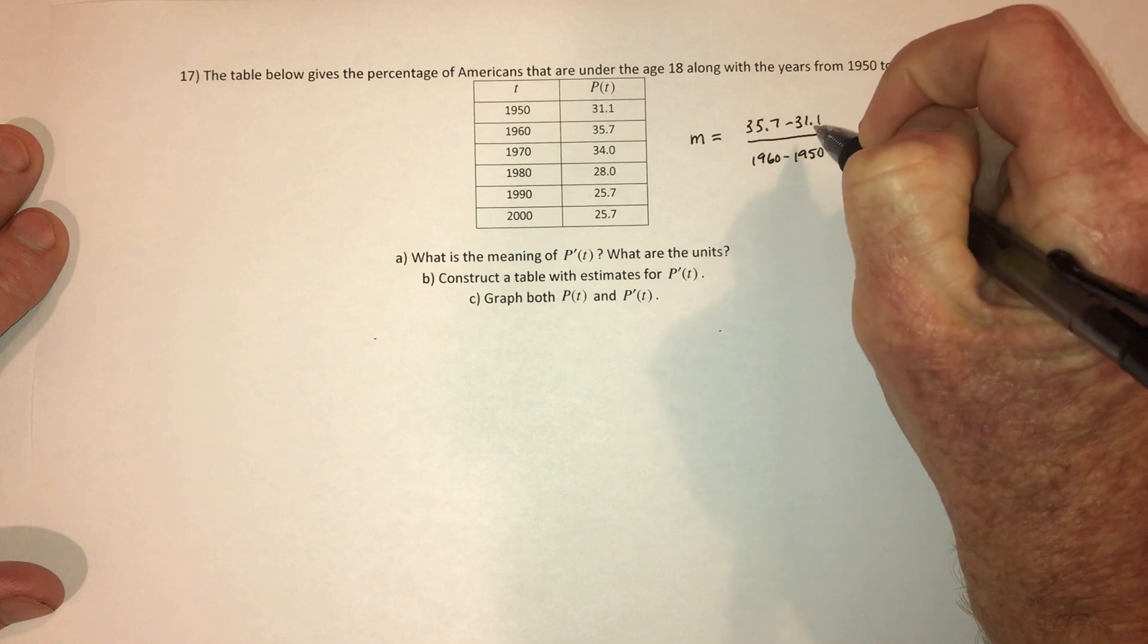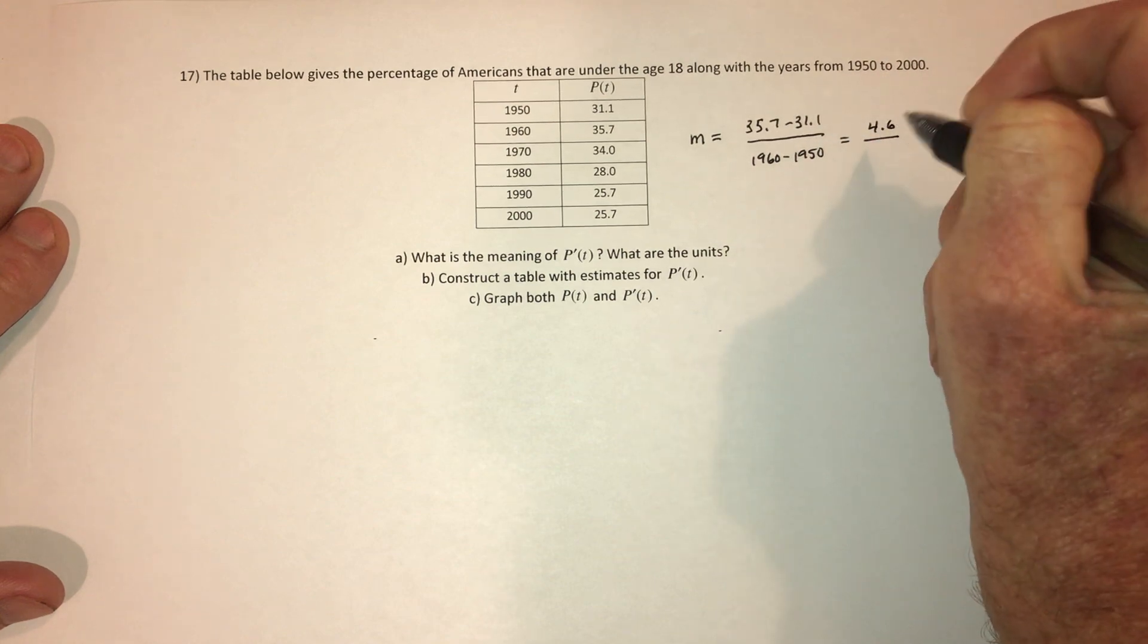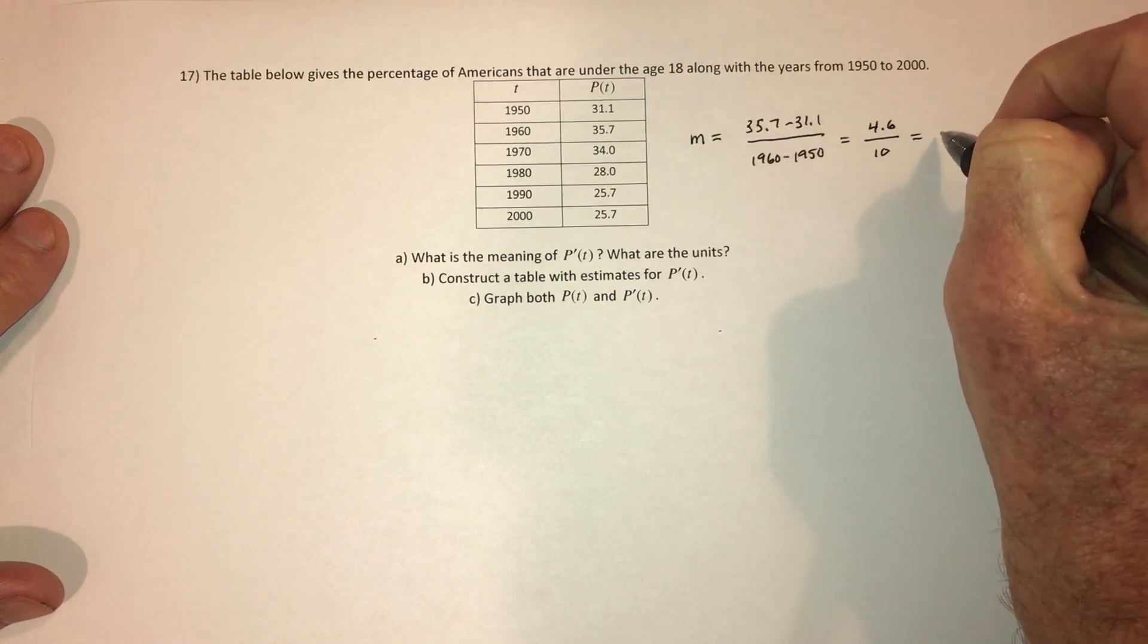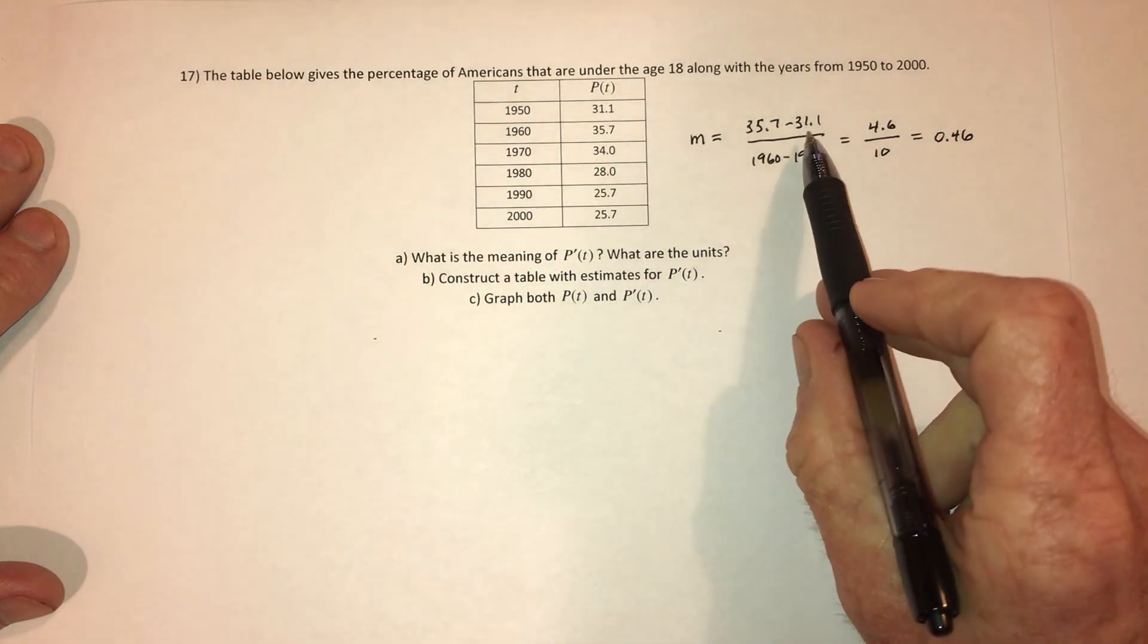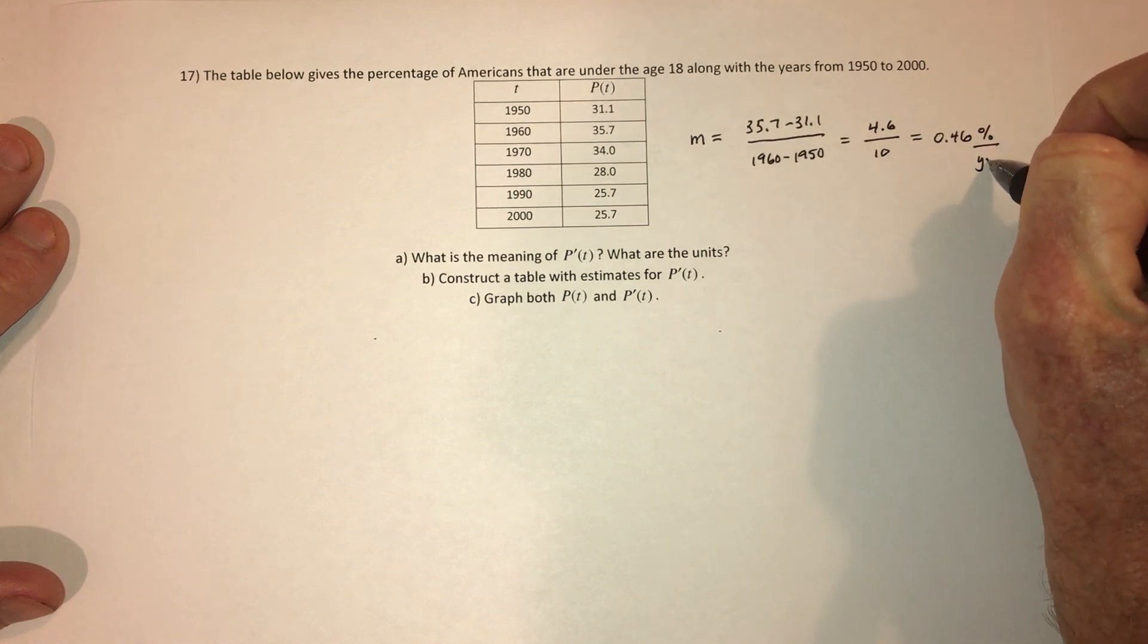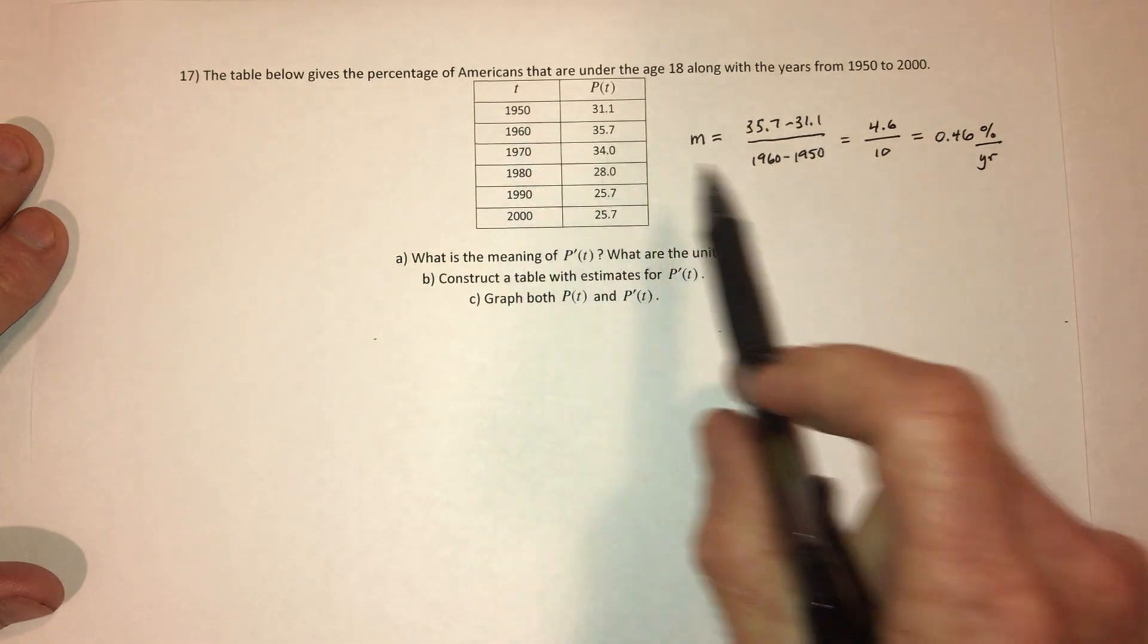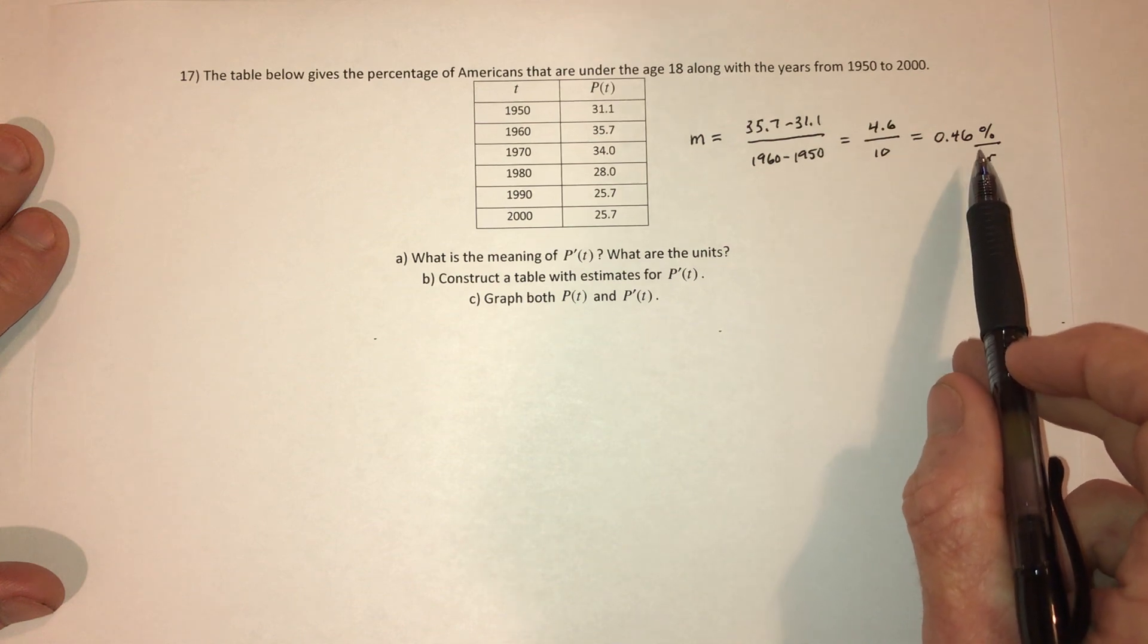So on the top, that is going to be 4.6. On the bottom, that's going to be 10. And so if you divide, that is 0.46. So these are percentages and these are years, so this would be percent per year. So from 1950 to 1960, they're growing an average of 0.46% per year.